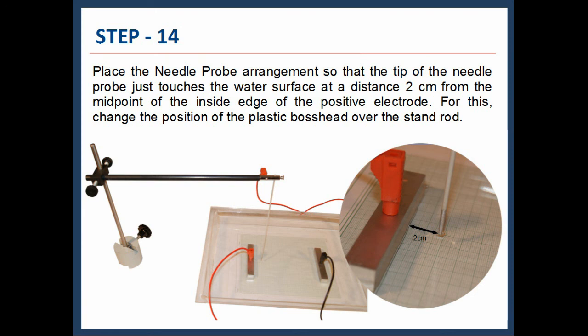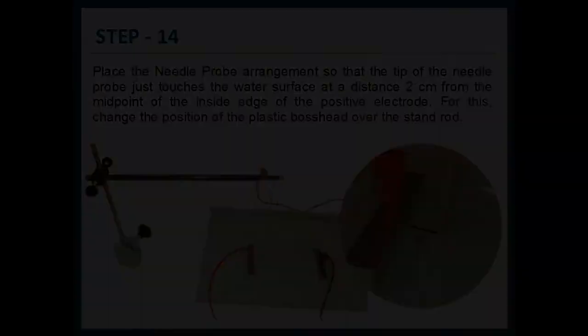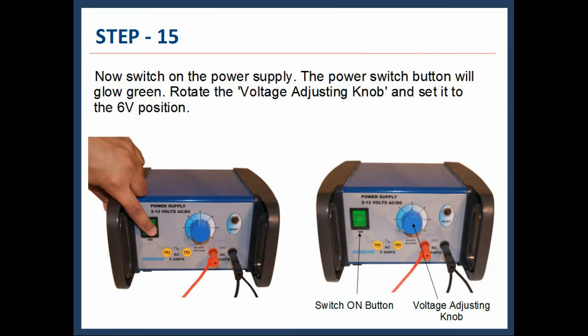For this, change the position of the plastic boss head over the stand rod. Now switch on the power supply. The power switch button will glow green. Rotate the voltage adjusting knob and set it to the six volt position.